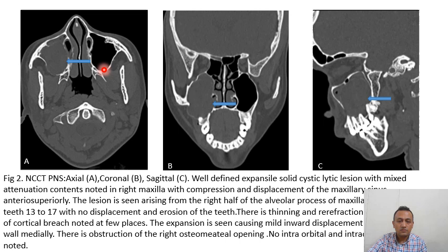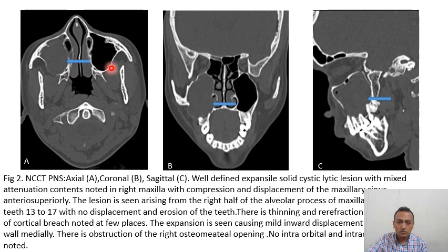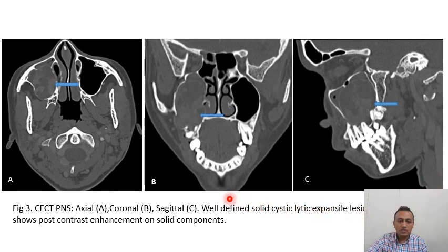On NCCT PNS — axial, coronal and sagittal sections — there is an expansile solid-cystic lesion with mixed attenuation noted in the right maxilla with compression and displacement of the maxillary sinus anterosuperiorly. The lesion is seen arising from the right half of the alveolar process of the mandible adjacent to teeth 13 to 17 with no displacement or erosion of the tooth. There is thinning and rarefaction with possible areas of cortical breach at a few places. Expansion is seen causing mild inward displacement of the lateral nasal wall medially, with obstruction of the right ostiomeatal opening. No intraorbital or intracranial extension is seen.